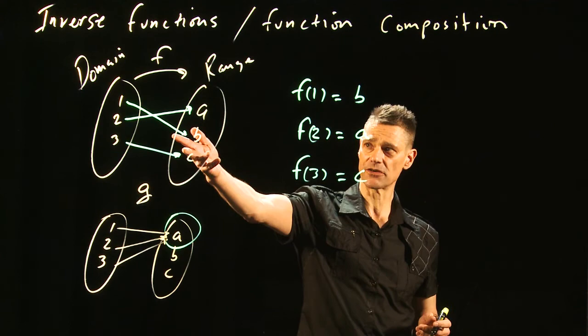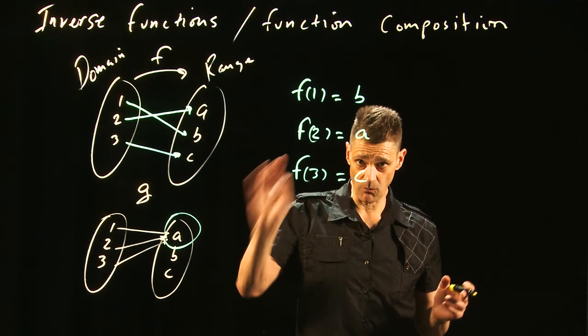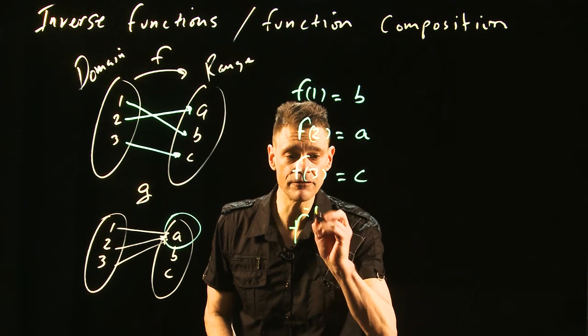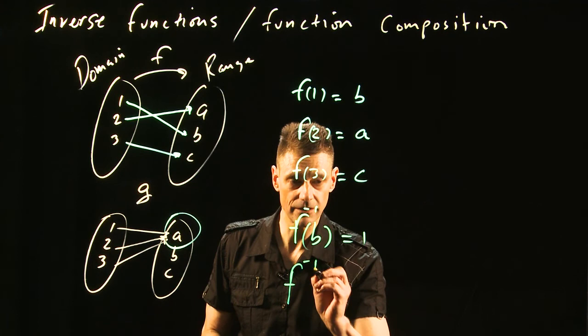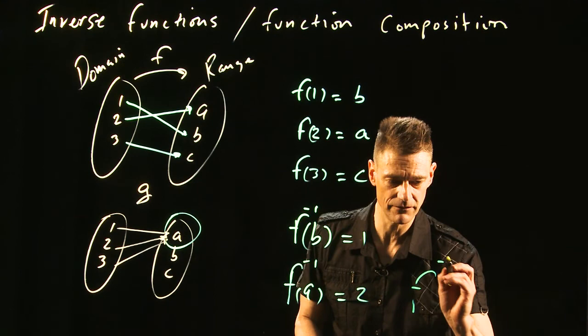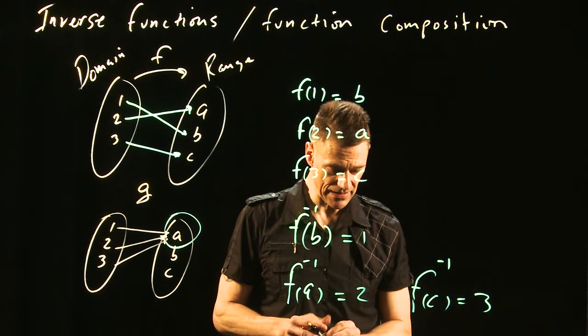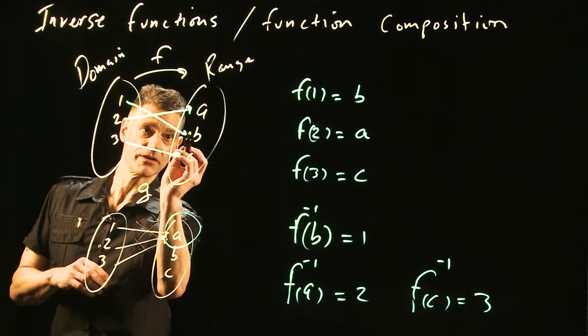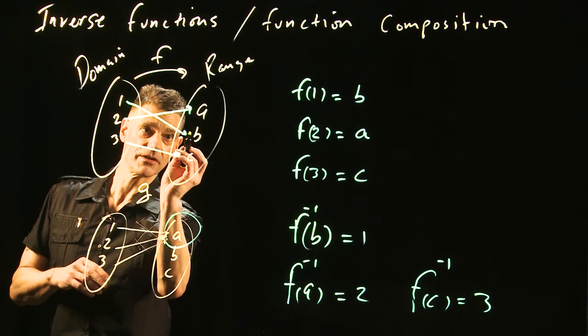Here's why this is so important. We have this function. We want to know if we can find an inverse function, and if it's one-to-one, we always can. Here's the notation: f inverse of B would equal 1, f inverse of A is equal to 2, and f inverse of C is equal to 3. Basically, the inverse just goes backwards, right? The inverse function maps this way, this way, and this way.